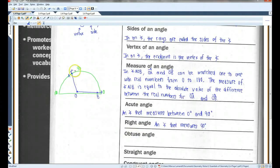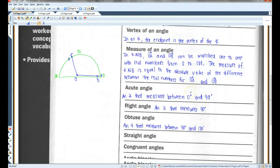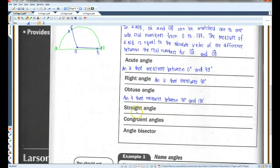An obtuse angle, which is what I happen to have drawn here, is an angle that measures between 90 and 180. A straight angle is an angle that looks pretty much like a straight line. It's an angle that measures exactly 180 degrees. So, straight line.